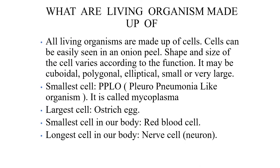All living organisms are made up of cells. Cells can be easily seen in an onion peel. If you take an onion and remove the outer layer, you can see a pinkish-white layer. If you remove that layer and keep it under the microscope, you can see small cells — a layer of cells.